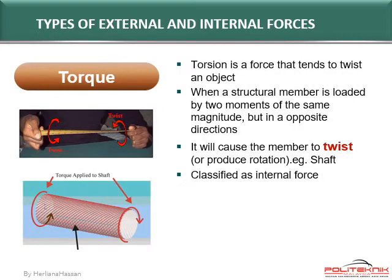The last type of force is torsion, also called torque. Torsion is a force that tends to twist an object. When a structural member is loaded by two moments of the same magnitude but in opposite directions, it will cause the member to twist or produce rotation. The example of torsion is force in a shaft. This force is classified as the internal force.